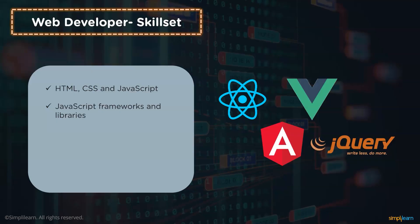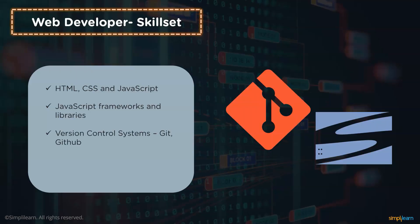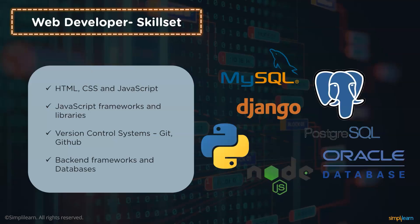JavaScript frameworks and libraries include React, Angular, and Vue, which help in creating interactive and beautiful front ends. We also have jQuery. For version control, there are systems like Git and GitHub. Git helps manage project files and keeps track of the entire history of what the user is working on. GitHub is a web-based service for version control using Git, where you can look at other people's code, identify issues or errors, and even propose changes.